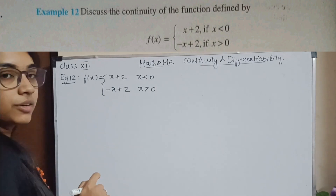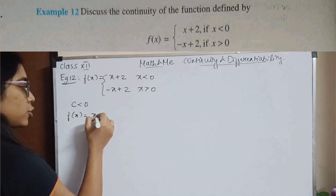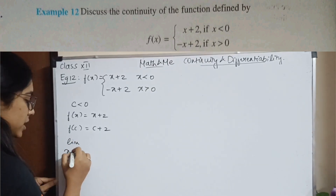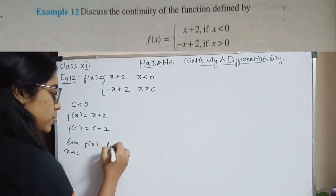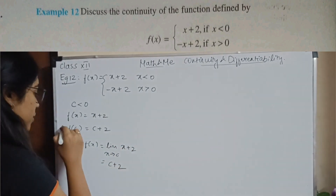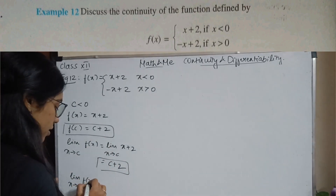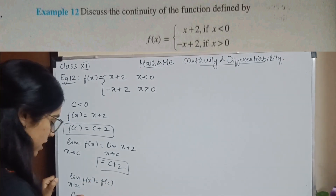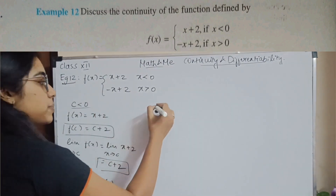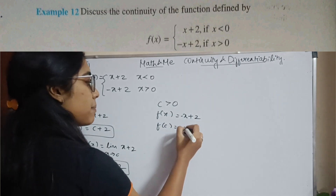Example 12. f of x equals the given piecewise function. When c is less than 0, the one and only condition is x plus 2, so f of c is c plus 2. The limit x tends to c of f of x is limit x tends to c of x plus 2. Substituting c I will have c plus 2. So f of c equals the limit — the function is continuous for all values when c is less than 0.